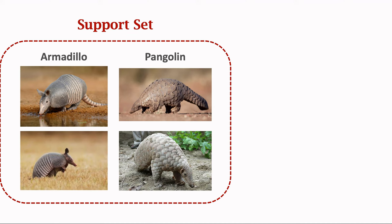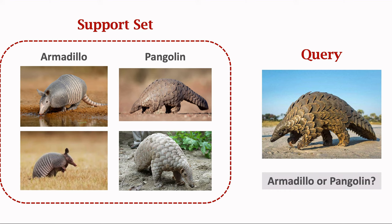Now I give you a query image. Do you think it is an armadillo or pangolin? Most people don't know the difference between armadillo and pangolin — they may have not even heard of them. But humans can learn to distinguish the two animals using nearly four training samples. For a human, making a prediction based on four training samples is not hard. But can a computer do this as well?